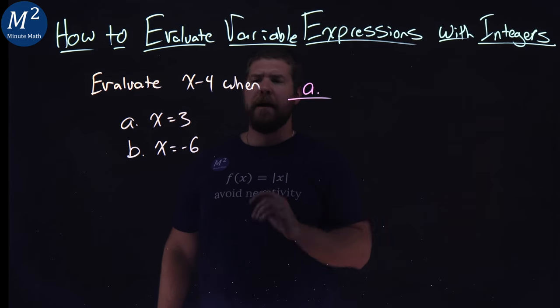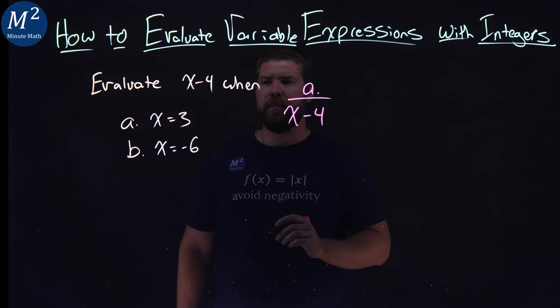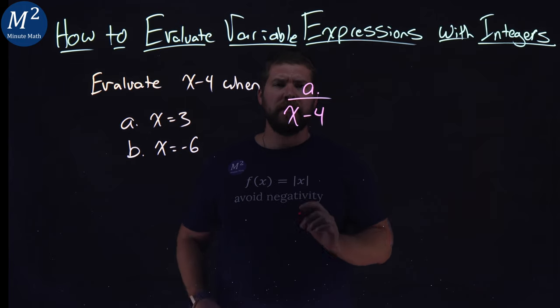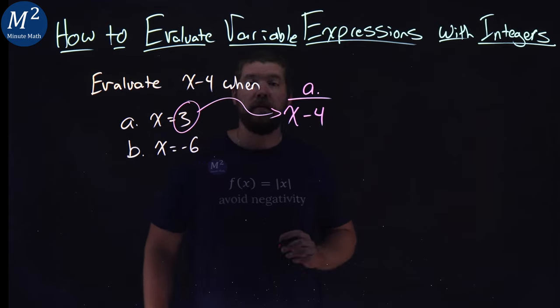Let's start with the first part, part A. They tell us we're going to evaluate x minus 4 when x equals 3. We have our x minus 4, and what I'm going to do is take this 3 and plug it in for x.